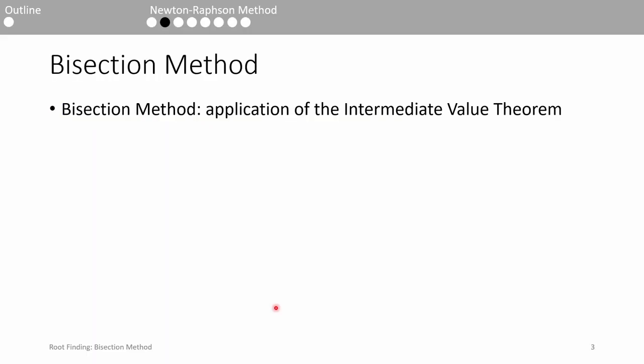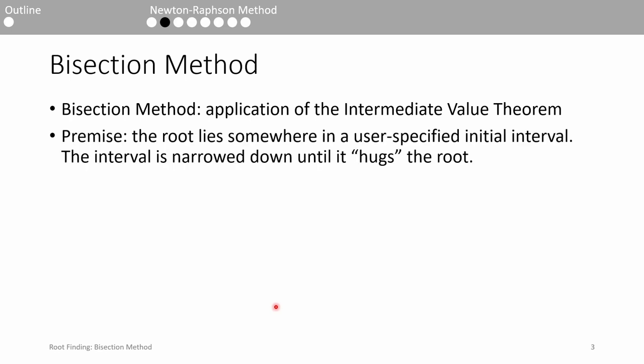The bisection method is one of the most famous root finding algorithms. This is a good algorithm to learn because it's straightforward and easy to implement in MATLAB or any other language. The basic operating principle is derived from the intermediate value theorem. The intermediate value theorem states that if f is continuous from an interval a to b, and f(a) and f(b) have opposite signs, the function must pass through 0 at some point between a and b. This operating principle is actually shared among all root finding methods, but the way in which each method arrives at the root differs.